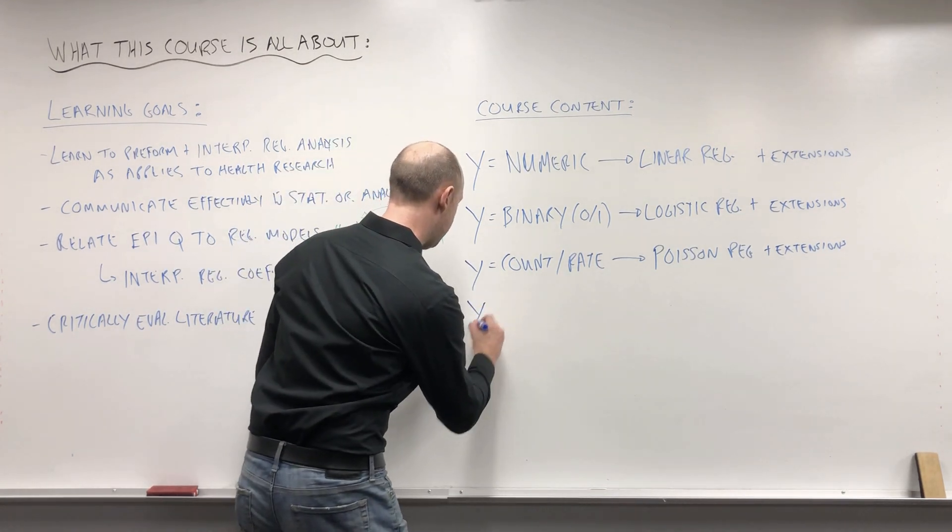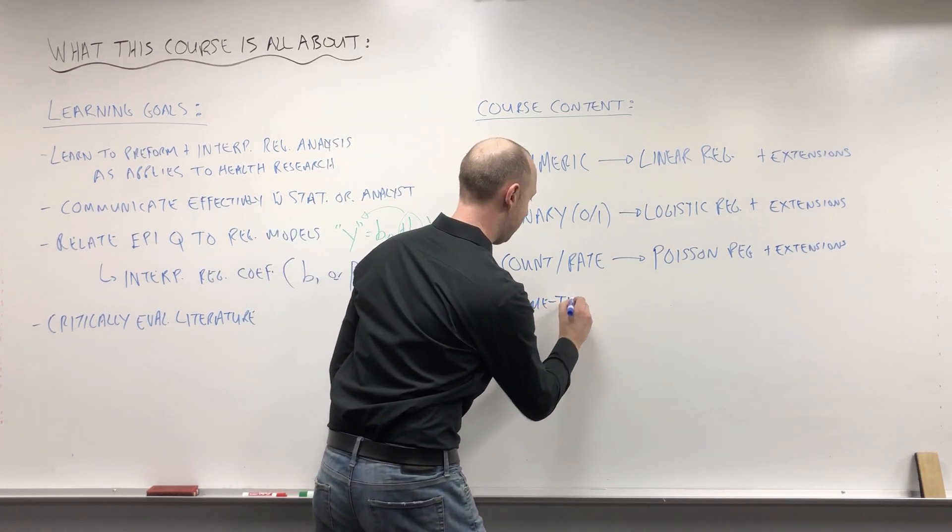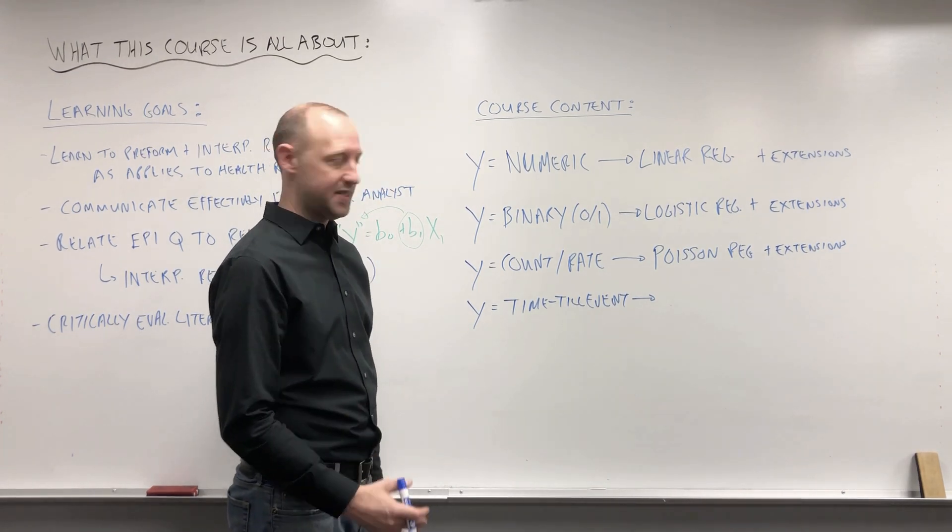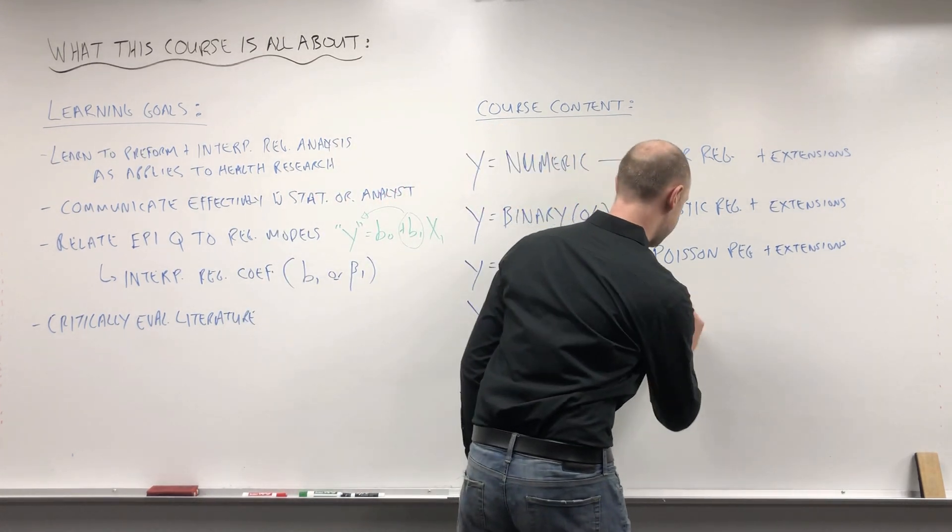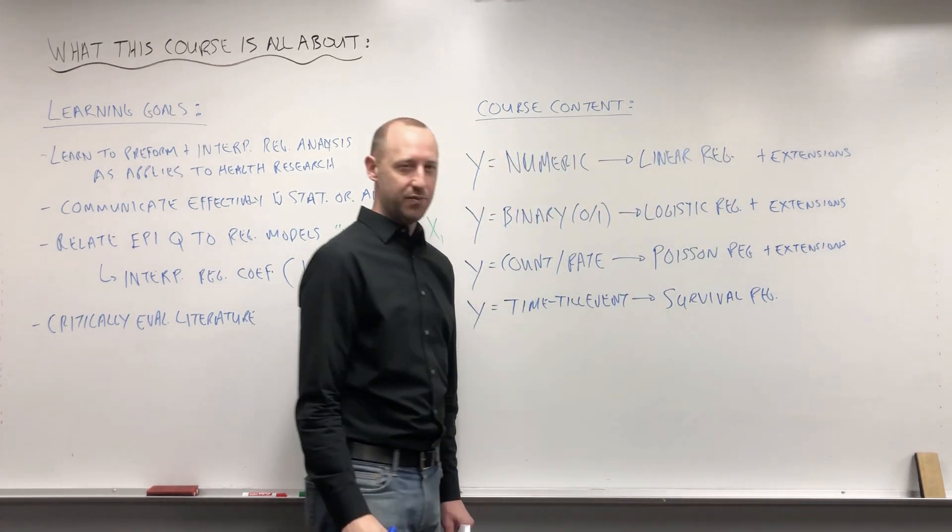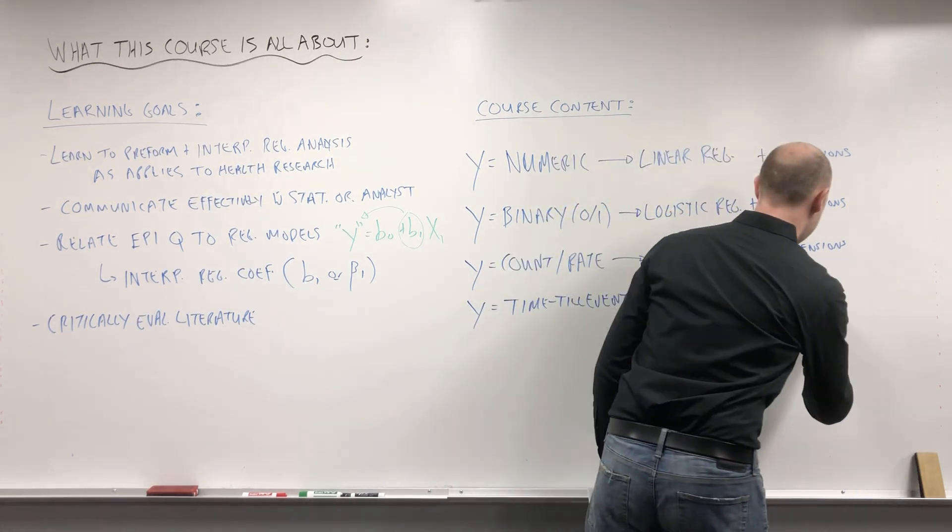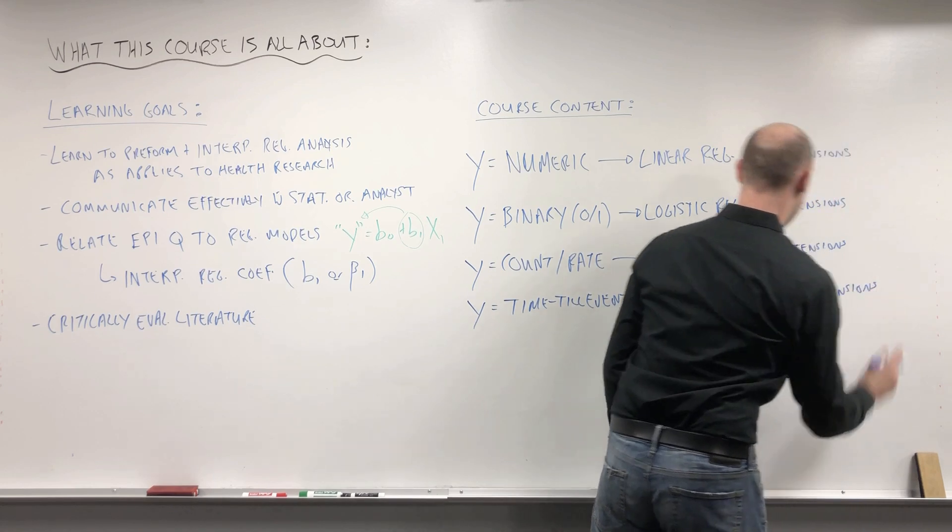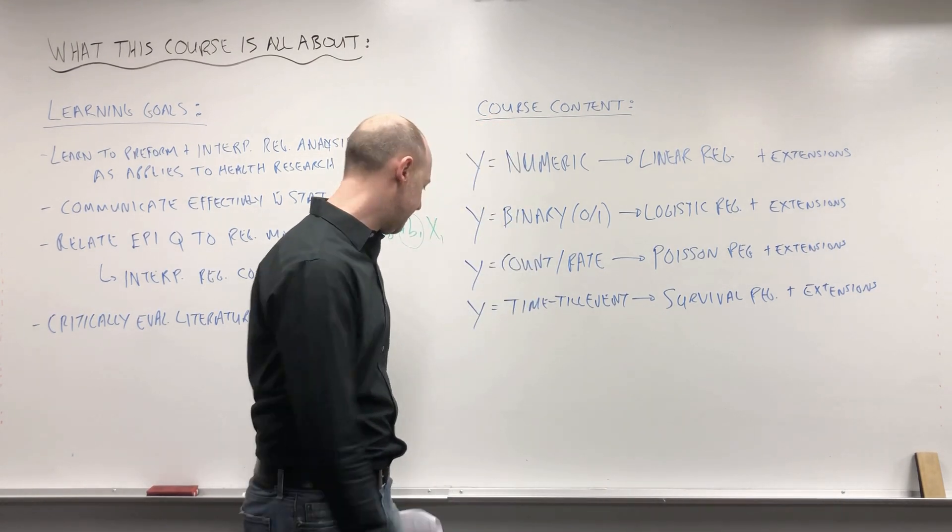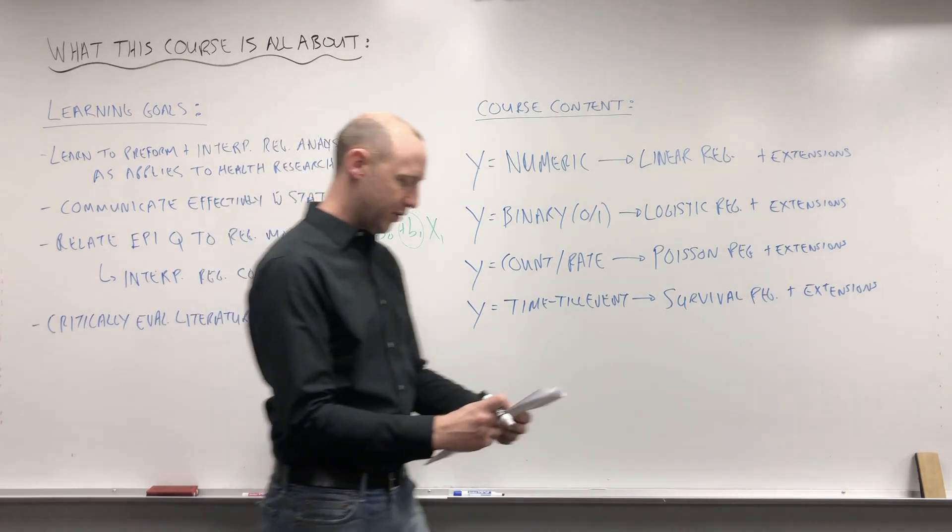And the final set of regression models we're going to look at is where we have time till event - so how long till someone dies, how long till someone contracts a disease, these kinds of waiting times. For this we're going to look at survival regression, so different survival regression models, Cox proportional hazards model, the Kaplan-Meier survival model, and again pointing to some extensions. We'll talk about what those are when we get there, but things that branch off from some of these standard models that we're going to be looking at. These final two are going to be lumped into about another four weeks of the course or another third of the course.